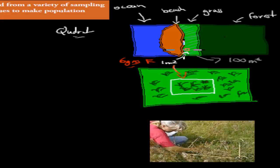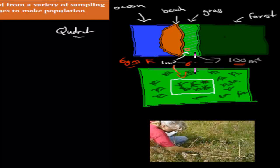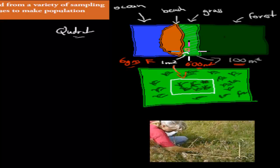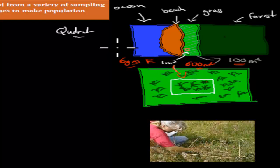Because the quadrant is one square meter and the whole area is 100 square meters, you can estimate: if we find six in one meter, we'd find 600 in the whole area. So quadrants let us measure a whole area without counting every single blade of grass, which would take a long time. Quadrants are used to measure abundance.